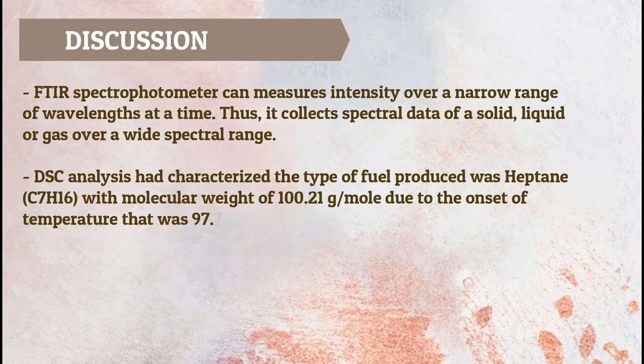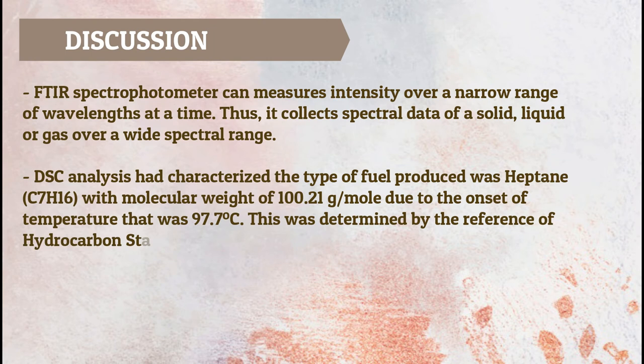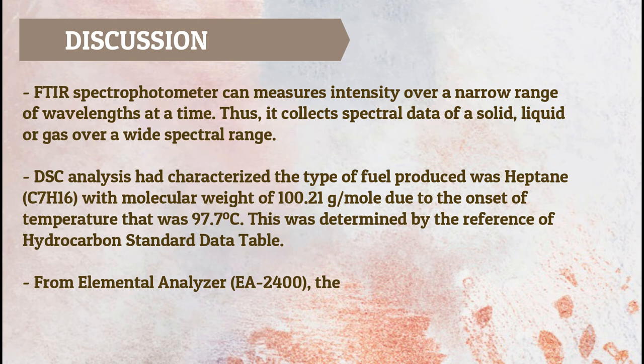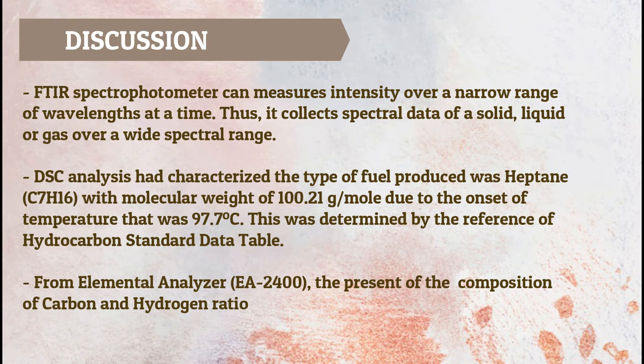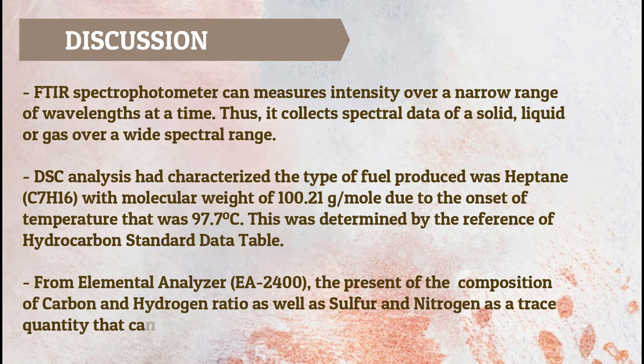This is due to the onset temperature of 97.7 degrees Celsius, which represents the boiling point of the compound heptane. This was determined by reference to a hydrocarbon standard delta table. From the elemental analyzer, the composition of carbon and hydrogen ratio as well as sulfur and nitrogen were found to be in trace quantities that are ignorable.